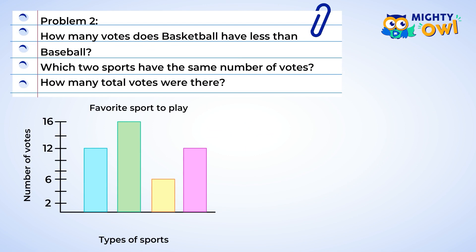Let's look at this bar graph. The title tells us that the information shown is which sports people like to play. The bottom part shows us the type of sports: baseball, football, basketball, and soccer. The left side gives us the number of votes. We have a good understanding of the graph now, so I think it's time to answer our questions.